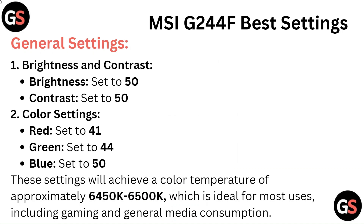General settings — brightness and contrast. Brightness set to 50, contrast set to 50. Color settings: red set to 41, green set to 44, blue set to 50. These settings will achieve a color temperature of approximately 6450K to 6500K, which is ideal for most users including gaming and general media consumption.